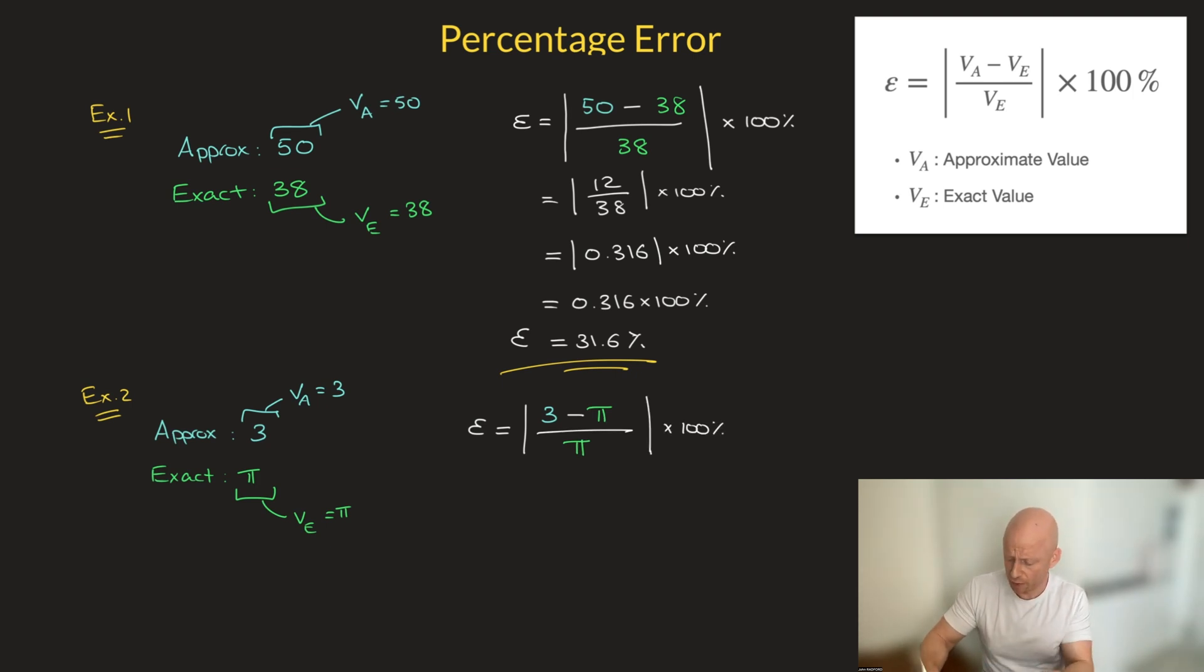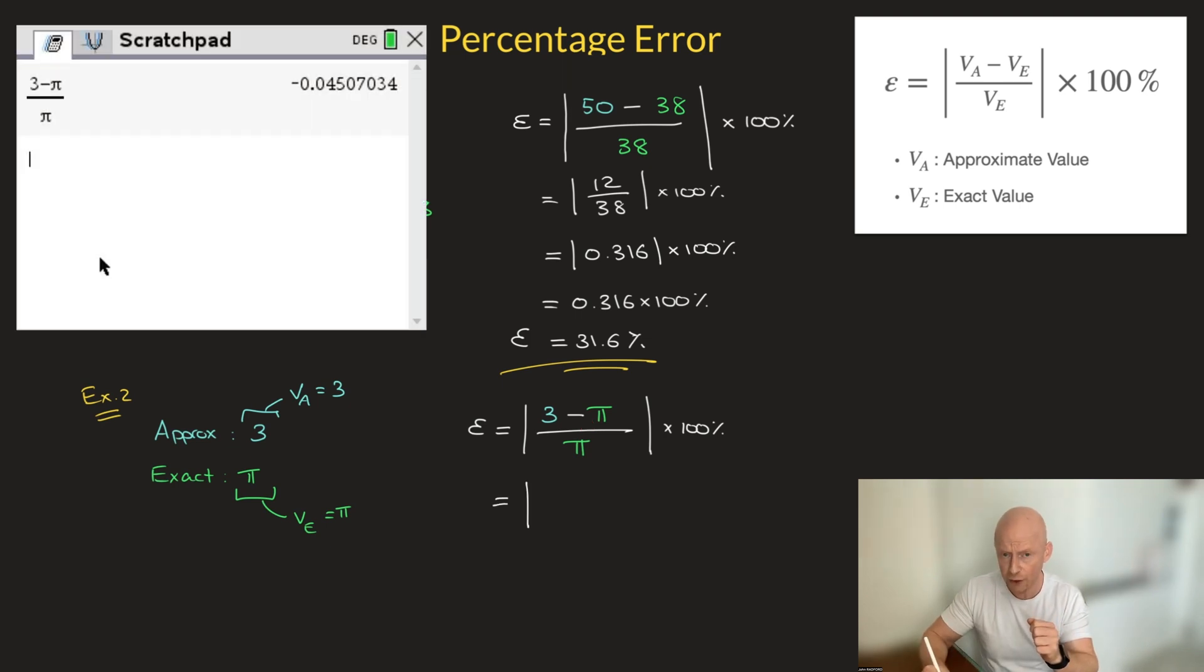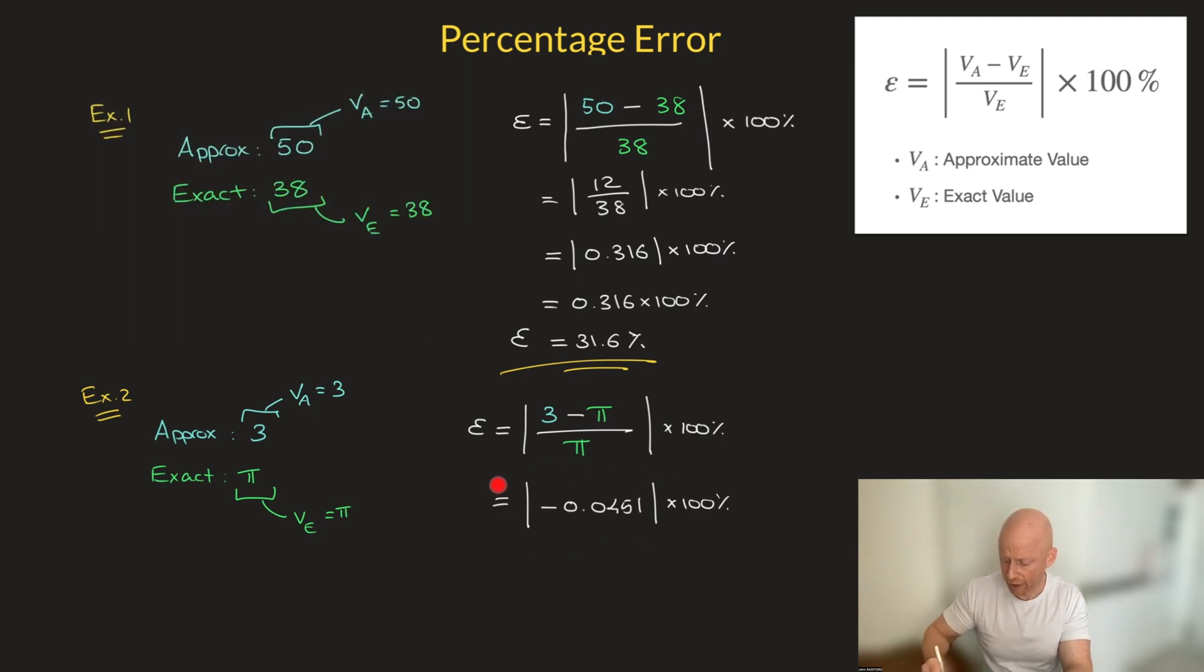Now, because it's not actually possible to know the exact value of pi, remember, it's an irrational number that goes on forever with no repetition, what I'll use as my value for pi is the value I have built into my calculator. And so plugging this fraction inside my calculator and rounding to 3 significant figures, I find that this is equal to the absolute value of negative 0.0451. And again, I multiply that by 100%.